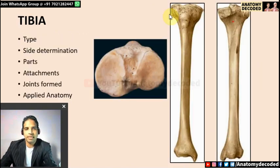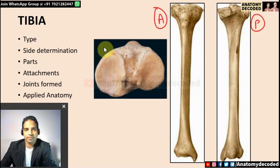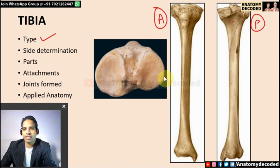Here we can see the right tibia viewed from the anterior aspect, posterior aspect, and the upper end from the superior aspect. Tibia is a typical long bone with three characteristic parts: upper end, shaft, and lower end.